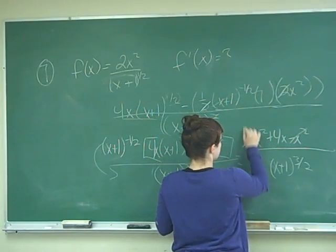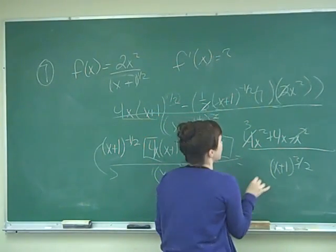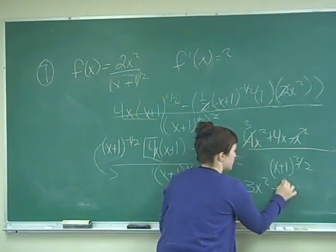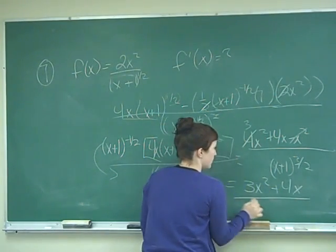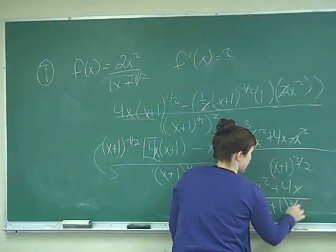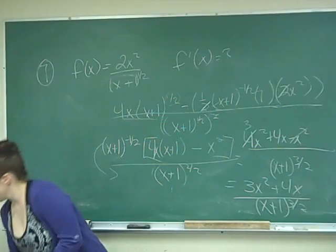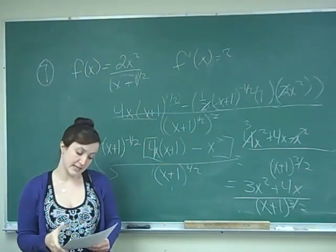So this gives me 3x squared. So my final, most simplified answer is going to be 3x squared plus 4x, all over x plus 1 to the 3 halves power. And that is answer D.